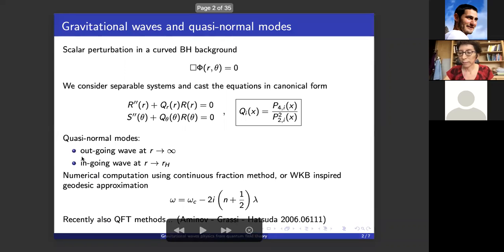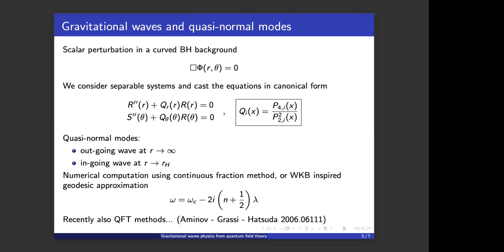Okay, so for simplicity we consider a scalar perturbation on a curved background. This usually opens a differential equation, box of phi equals zero. We also consider separable systems in which one can separate the radial and angular components of the equation into several differential equations which can then be cast into canonical form in terms of this q function. Q is usually the ratio between a fourth order polynomial and a second order polynomial squared.